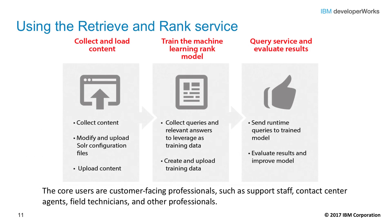Here's a flow for a typical usage scenario for the Retrieve and Rank Service. This service requires training in order to perform well on a given set of input. The first step is collecting the content and uploading it into the service. Then the Learning Rank Model is trained by providing a set of queries and identification of the relevant answers. After the initial training, the service is given a new set of queries. The resulting responses and ranks are evaluated and, if necessary, the model is improved. Applications using Retrieve and Rank usually align well to customer-facing professionals, such as support staff, contract center agents, field technicians, and other professionals.